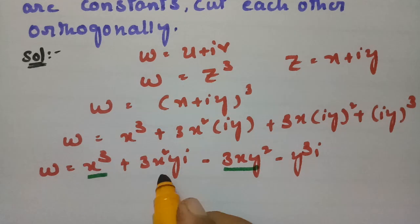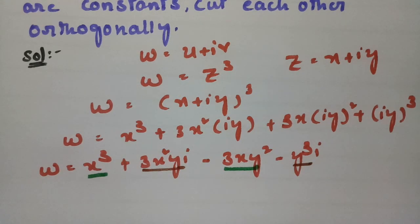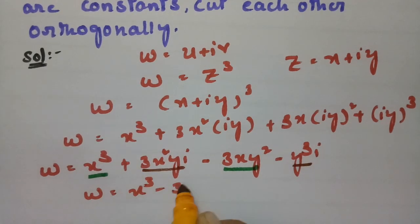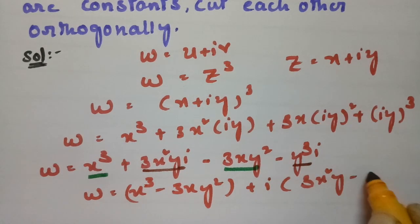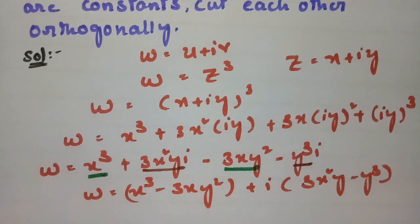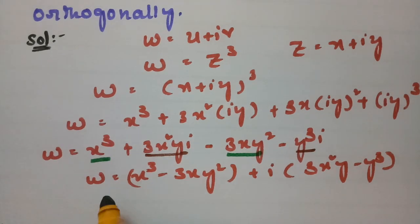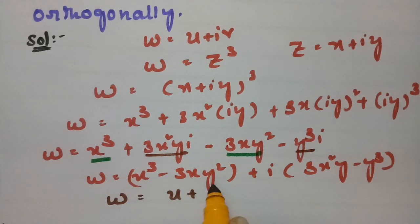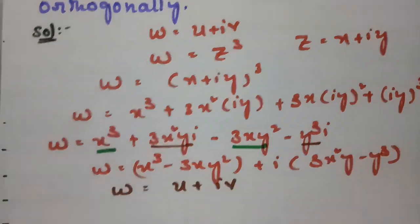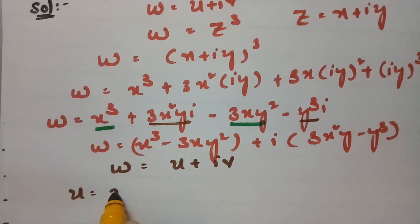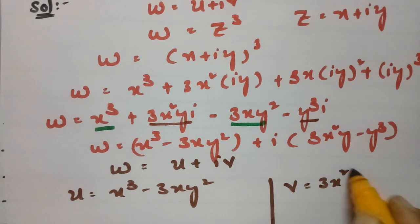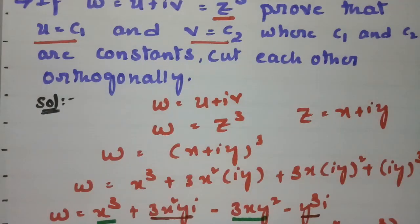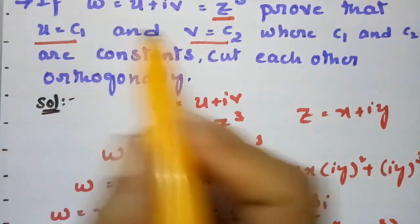Separating real and imaginary parts, w = (x³ - 3xy²) + i(3x²y - y³). Since w = u + iv, we identify u = x³ - 3xy² and v = 3x²y - y³.